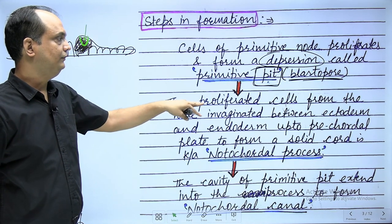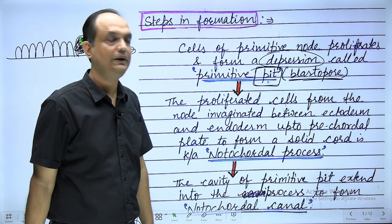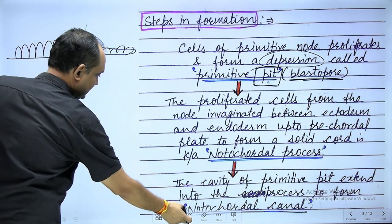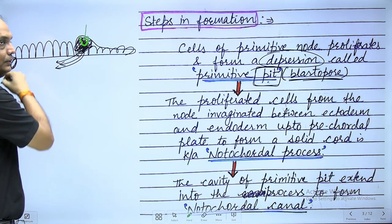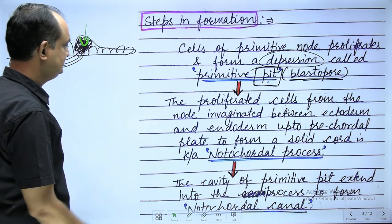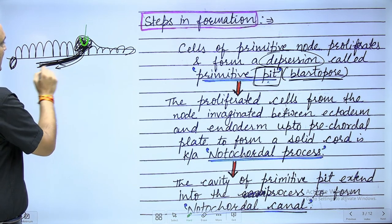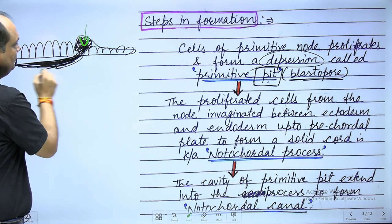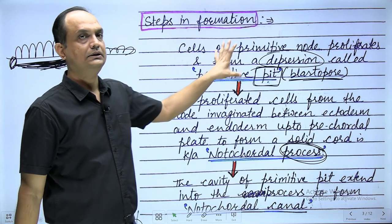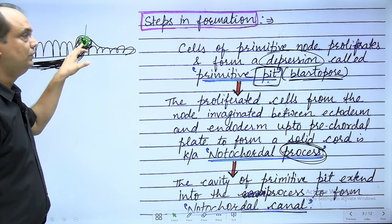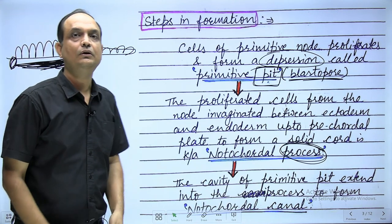In step two, proliferated cells from the node invaginate between the ectoderm and endoderm, migrating anteriorly towards the pre-cordal plate. This migration forms a thick cellular linear cord known as the notochordal process. So first, cells of the primitive node proliferate and migrate anteriorly below the epiblast towards the pre-cordal plate to form the notochordal process.